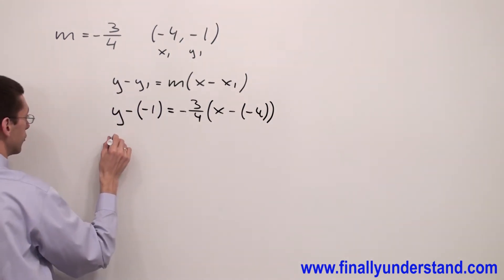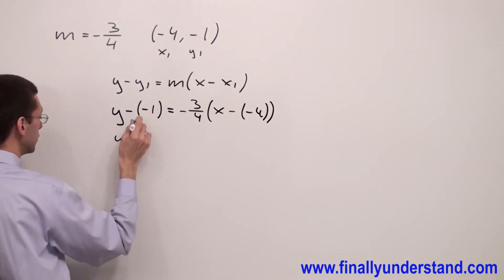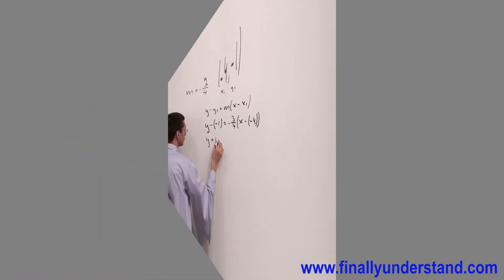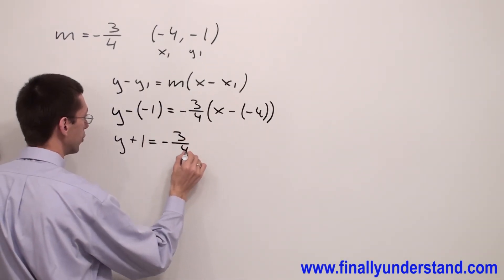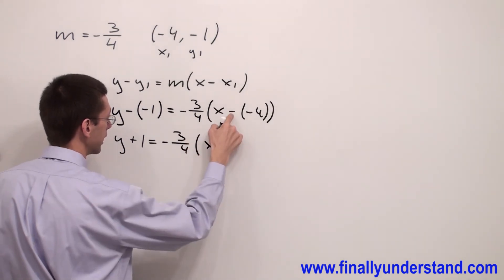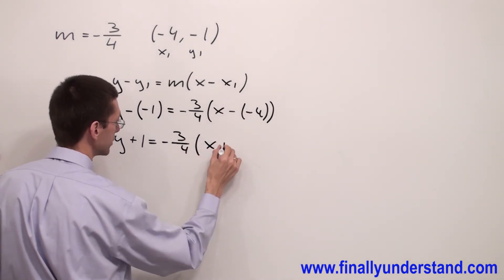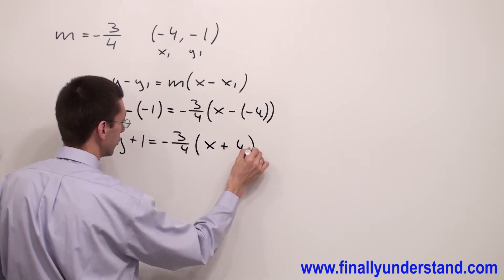And I'm going to have y negative times negative gives me positive. This is equal to negative 3 over 4, and I have x negative times negative gives me positive 4.